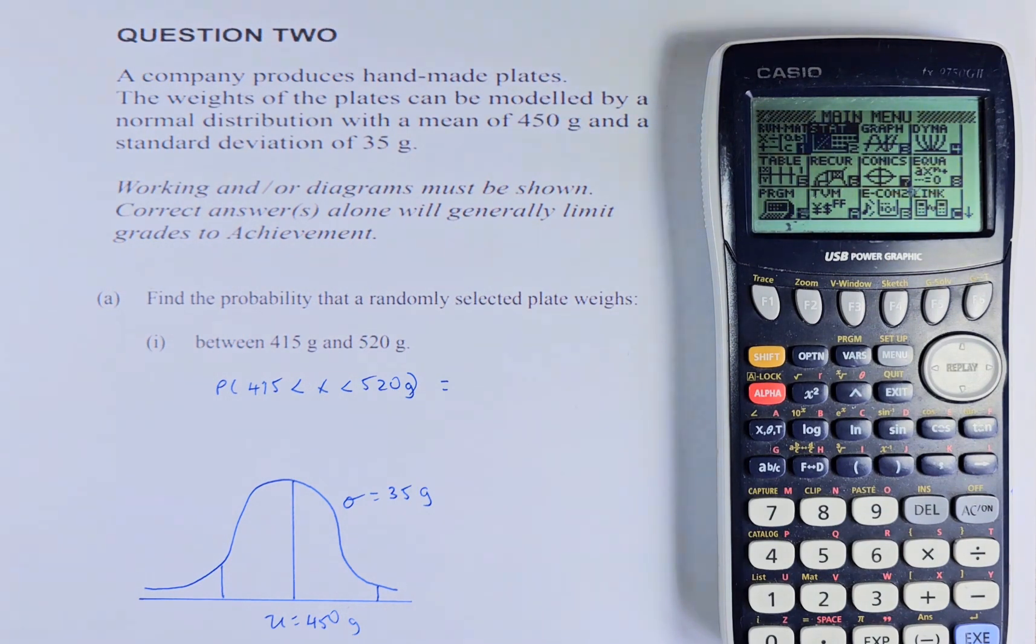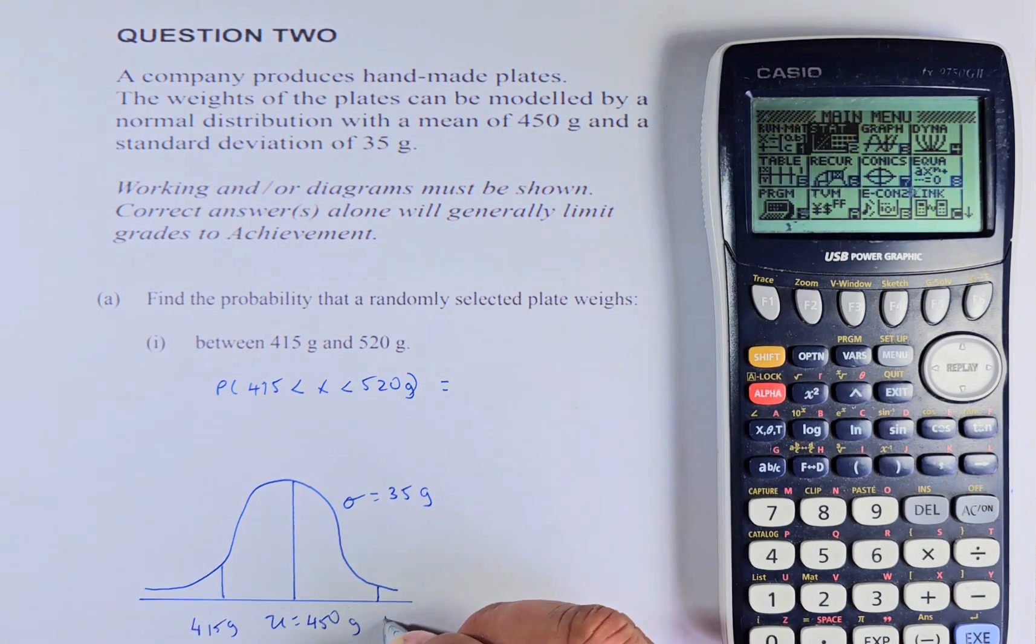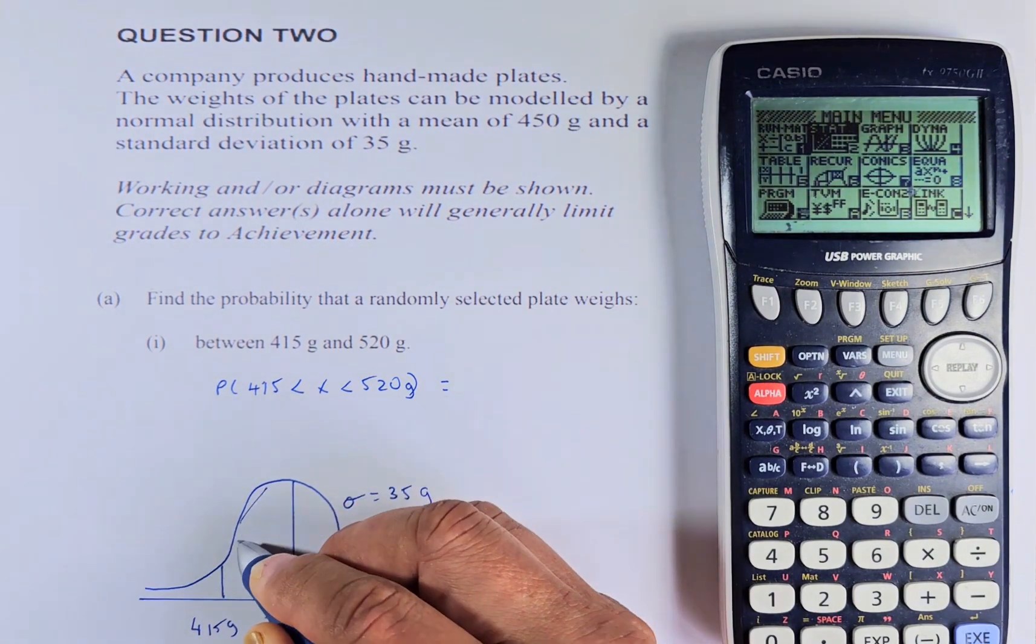Working and/or diagram must be shown. Correct answers alone will generally limit grades to achieve. Find the probability that a randomly selected plate weighs between 415 grams and 520 grams. So 415 is to the left of 450 so we write that as 415 grams, and 520 is to the right of 450. So the area we are looking at is this area here.